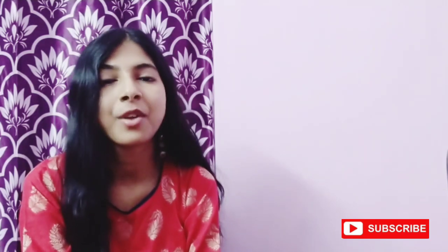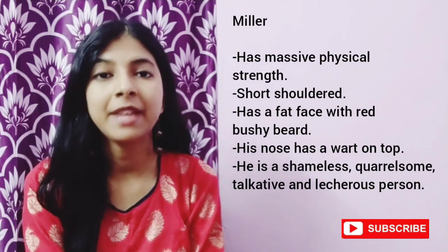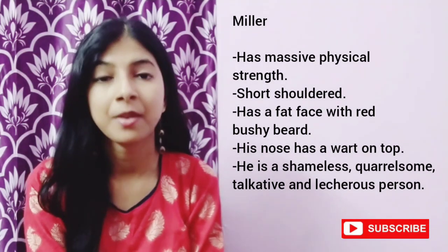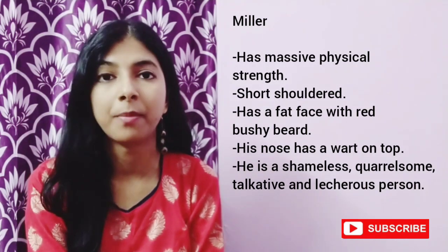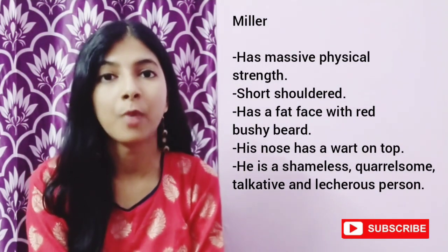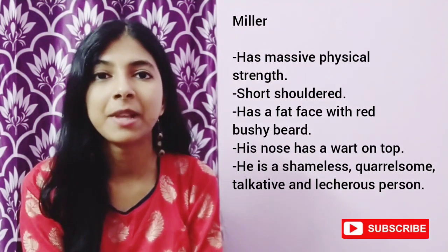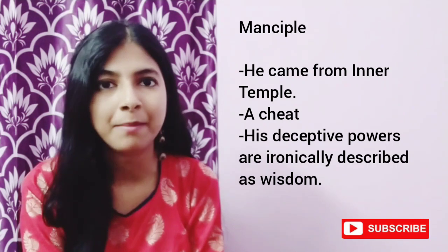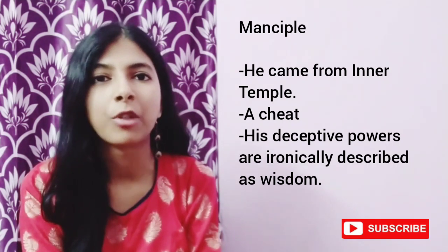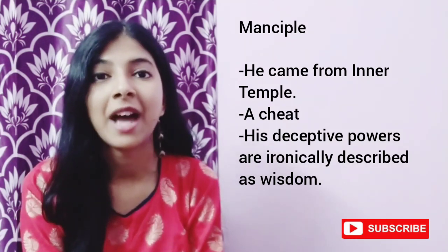The next pilgrim is the Miller. He has massive physical strength — he is broad-shouldered with a fat face and red bushy beard, and his nose has a wart on top. He is a shameless, quarrelsome, talkative and lecherous person. The next pilgrim is the Manciple, who comes from the Inner Temple. Just like the Miller, the Manciple is also a cheat, and his deceiving powers are ironically described as wisdom.